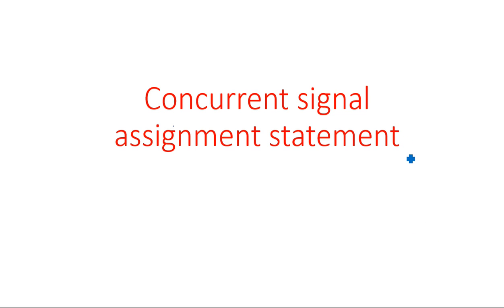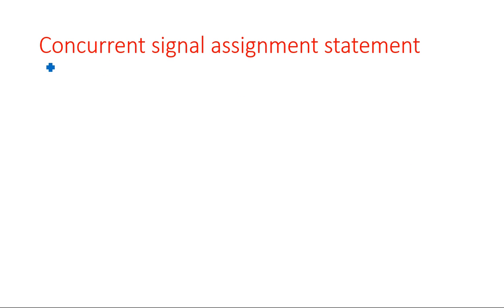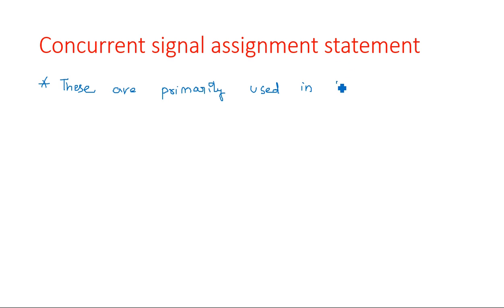In this video I am going to explain concurrent signal assignment statements. These are primarily used in data flow modeling. There are three different types of VHDL programming models available: structural model, data flow model, and behavioral model. The process statement, which we have seen in the previous video, is used in the behavioral modeling, but in data flow modeling we use concurrent signal assignment statements.